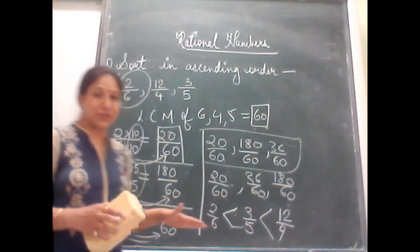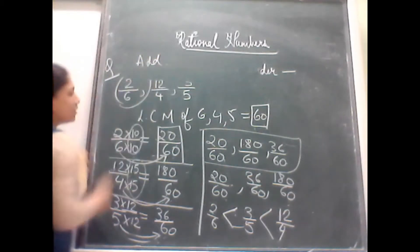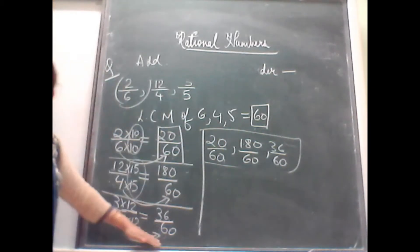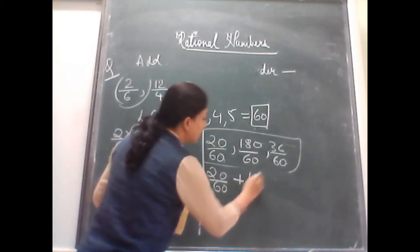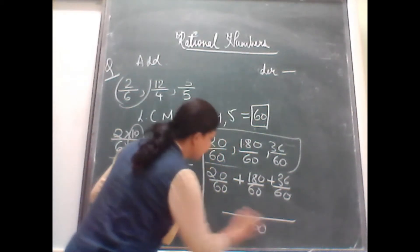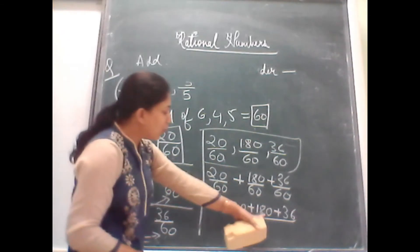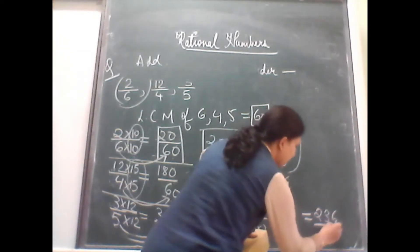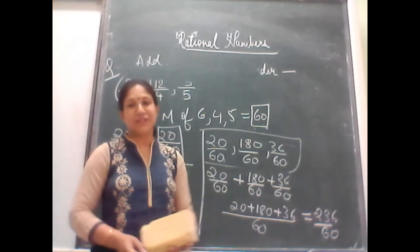Take for example, in this question. Here the question was write down in ascending order. Suppose the question was to add the following. Still here, when you get the LCM and get it in like form, instead of commas, you rewrite these numbers. Put a plus sign and add the numbers. So here it will become 60, 20 plus 180 plus 36. Now check, 180 plus 20, 200. 200 plus 36, the answer is 236 upon 60. And because it is an improper fraction, you can convert it into mixed fraction. Isn't it so easy?